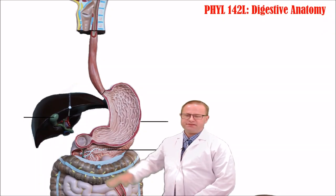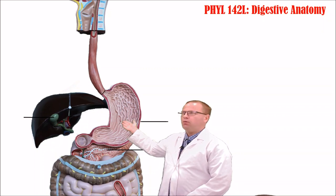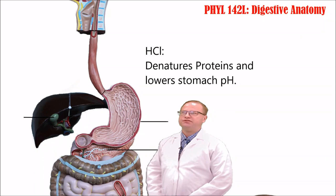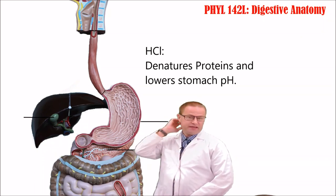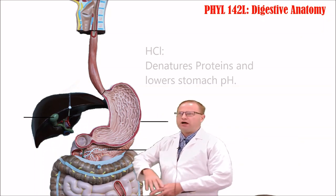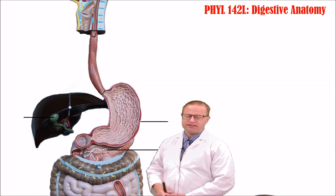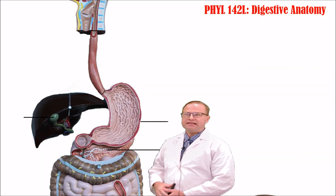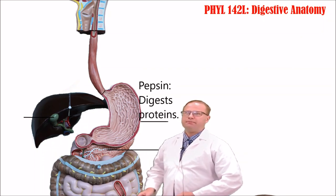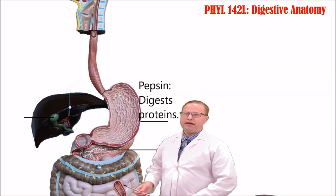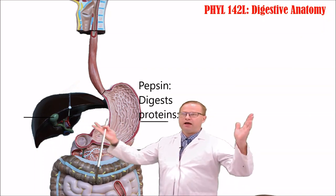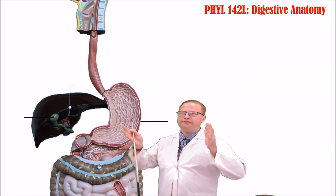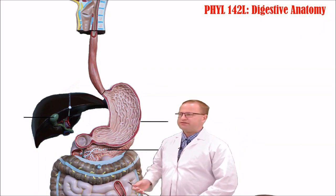Once food is in the stomach, we have stomach secretions. First there's hydrochloric acid, made by our parietal cells. The hydrochloric acid reduces the pH to about 2 and also denatures or unfolds proteins so they're more easily digested. Another important secretion is the enzyme pepsin, secreted by chief cells. Pepsin is responsible for breaking down large proteins into individual amino acids — so protein digestion begins in the stomach.